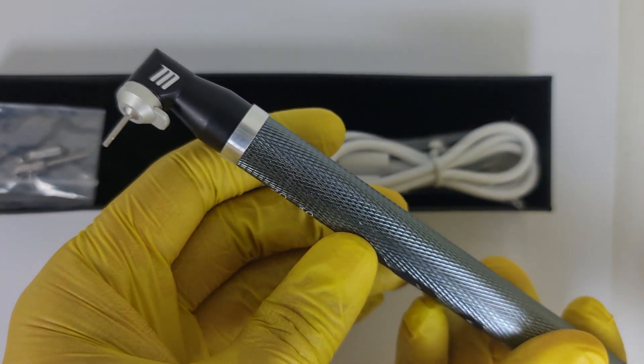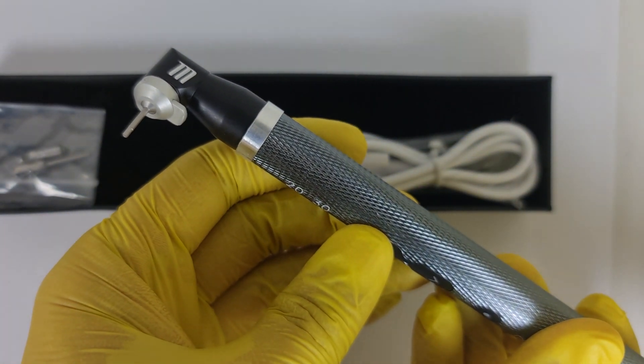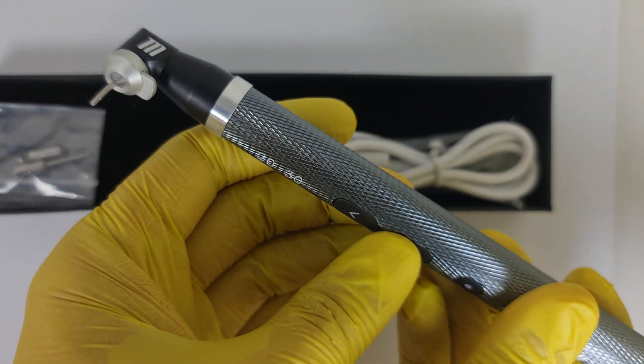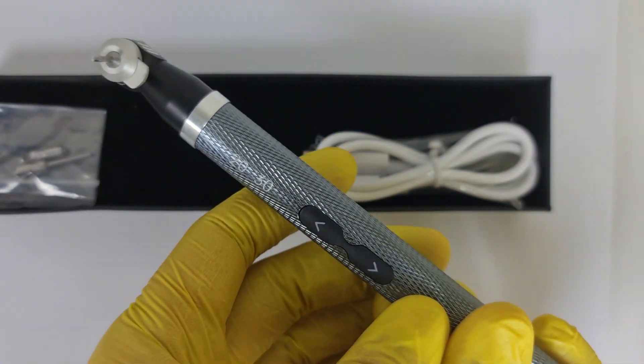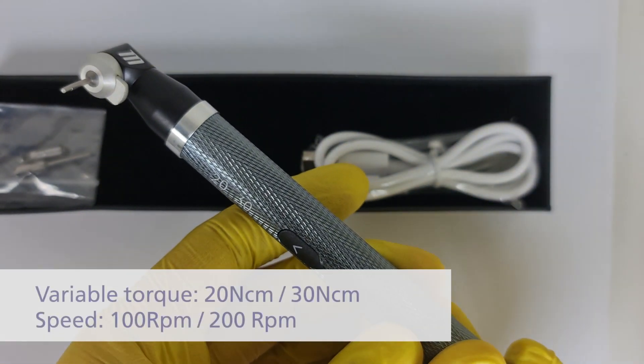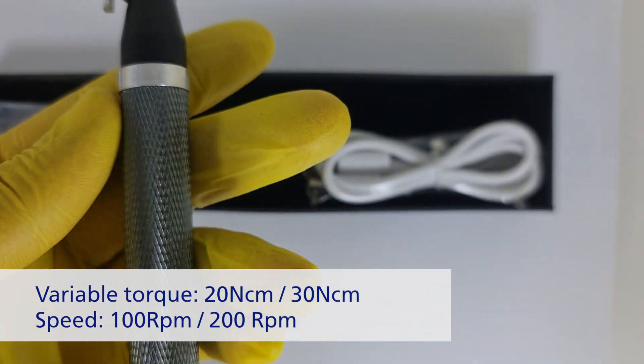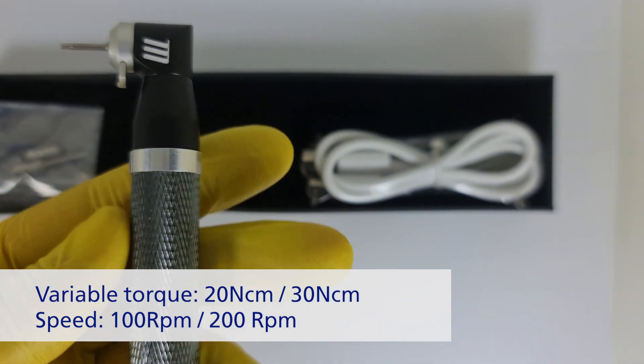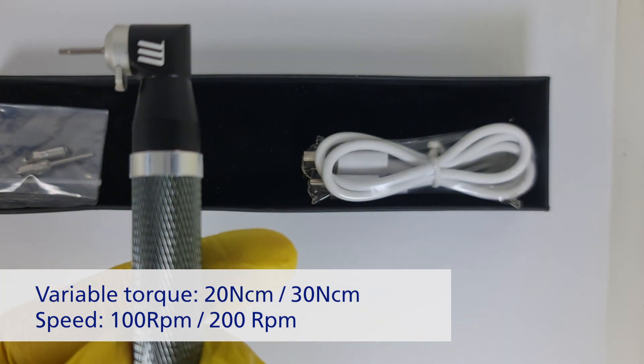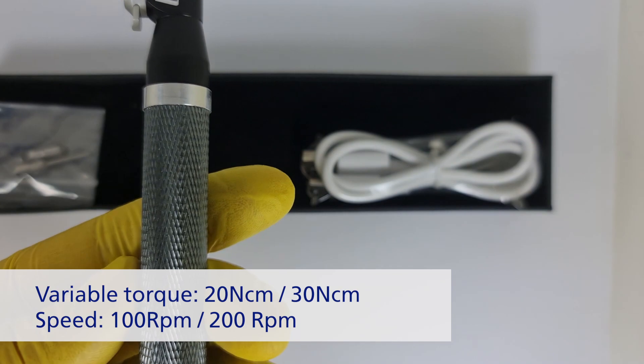What you have here is the same button for tightening and releasing the screw, but also there is a third button. Clicking on this button once and you will work on 20 newton centimeters. Clicking twice, you will be changed to 30, the maximum torque.